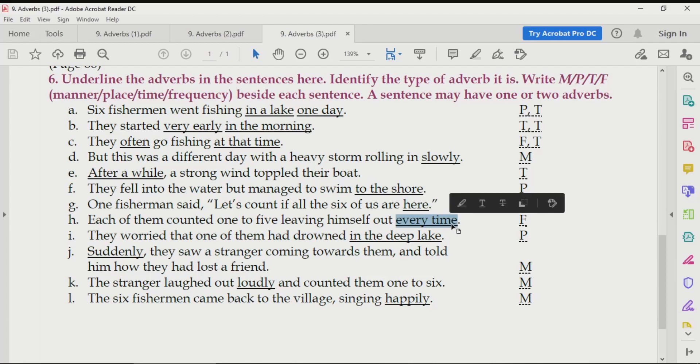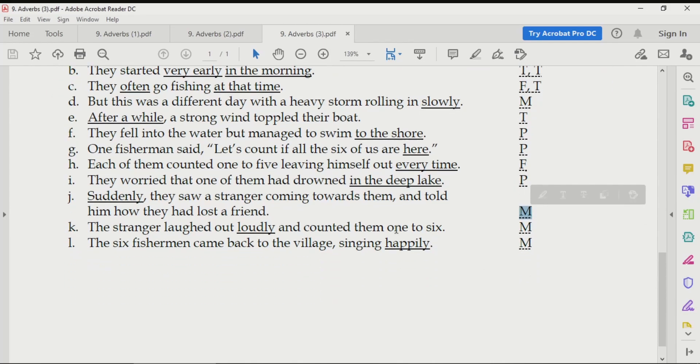Every time, we are asking about kitne baar. So, it will be frequency. In the deep lake is a place. So, we will write P. Suddenly means kis tarike say or you can say in what way suddenly. So, M that means manner. Loudly is also a manner easy to understand. Happily is also manner. This is also easy to understand. So, you will write M for this one and M for this one.